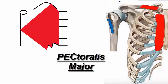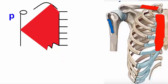First, the pectoralis major. Let's take the first three letters and the M of 'major' to make a mnemonic for its attachments. The P represents the humerus, which looks like the letter P. The U or Y resembles the sternum and costal cartilages with the ribs. The C stands for the clavicle, and the M stands for the external oblique aponeurosis.